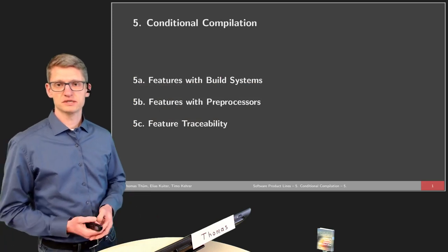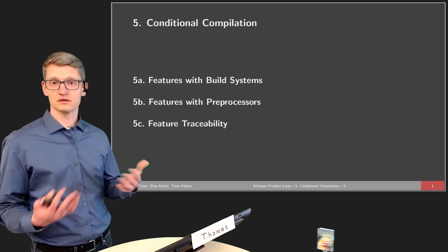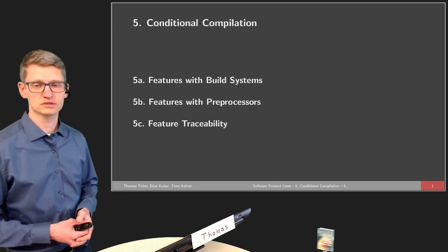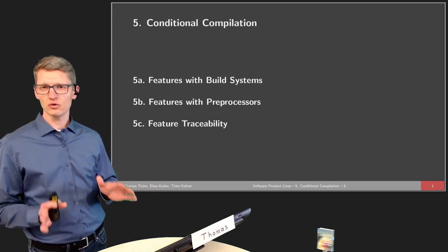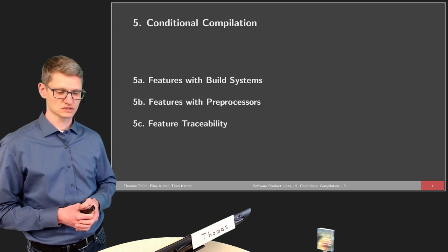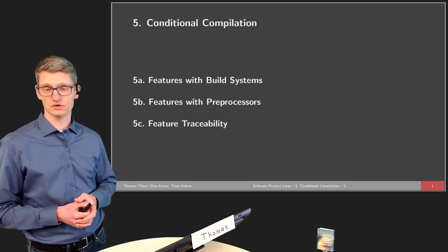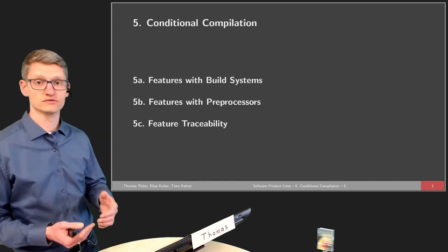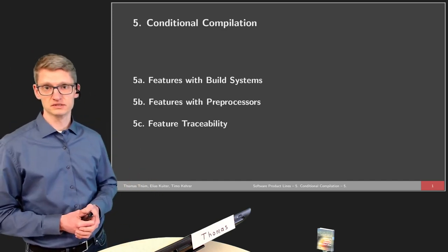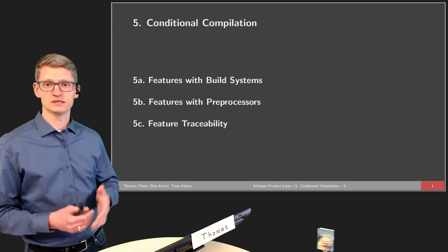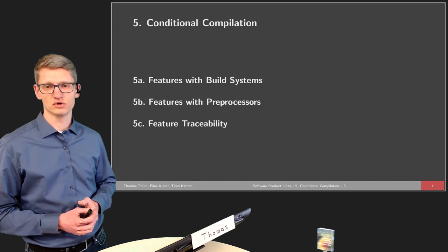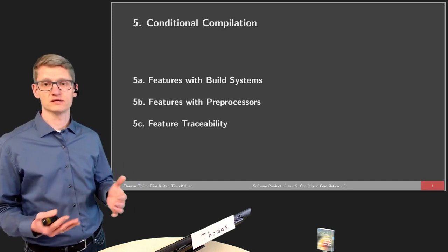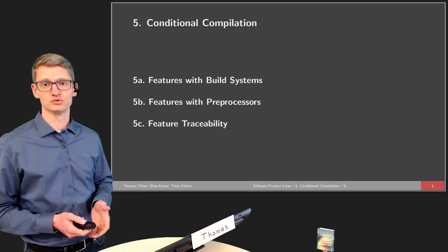This lecture is split into three different parts. The general principle of conditional compilation can be realized by different means, for instance by build systems. The first part will be on how to realize the vision of features by means of build systems. In the second part, we will see that preprocessors can give us a more fine-grained version of features in source code. And in the third part, we will talk about feature traceability and ways to deal with it from a tool perspective.